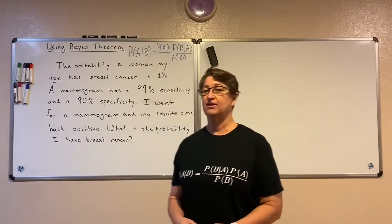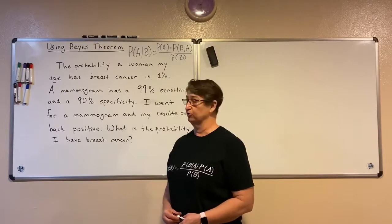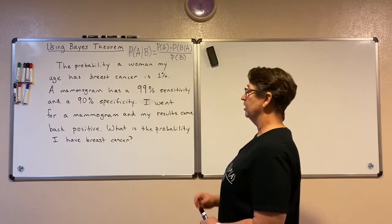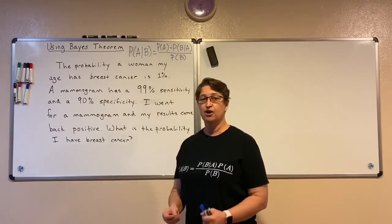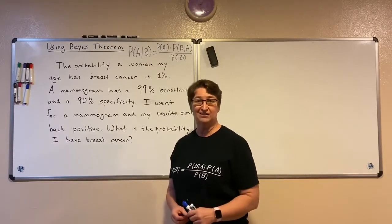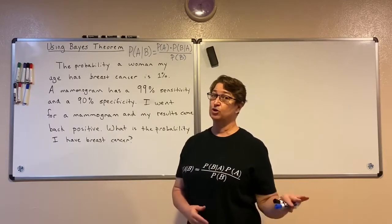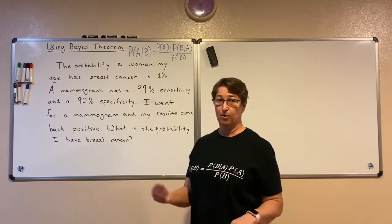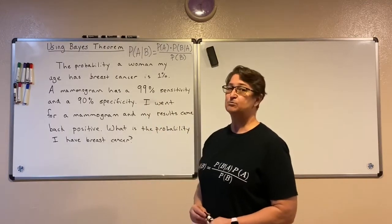Let's look at the probability that I actually have breast cancer once I get that positive result. The probability a woman my age has breast cancer is one percent. A mammogram has a 99 percent sensitivity — in other words, 99 percent of the time, if you have breast cancer, it's going to catch it and give you a positive result. One percent of the time it'll give a false negative. And a 90 percent specificity means that if you don't have the disease, 90 percent of the time you'll get results back that say you don't have the disease.